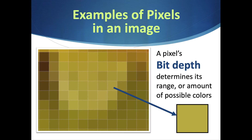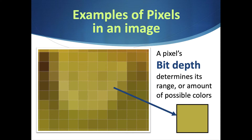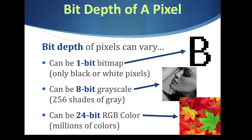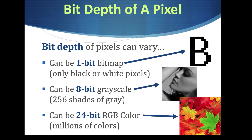When you really zoom in on an image, each pixel comes out to one color. The amount of colors a pixel can be depends on its bit depth — think of it as its range of colors. Bit depth is how many bits it uses, which determines the number of colors available. We'll talk more about bits when we cover binary.